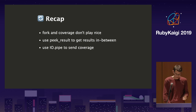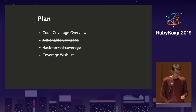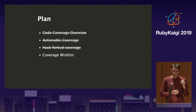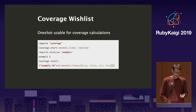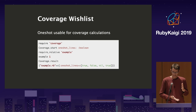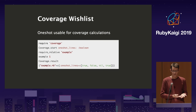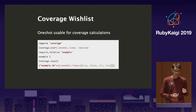Recap for fork coverage: forking and coverage don't play nice together, so we have to work around them. Use peek_result to get in-between results, combine multiple results, and use a pipe to send coverage between processes. Now for the wish list — the tools we still need to make coverage better.